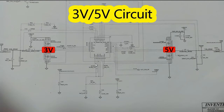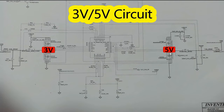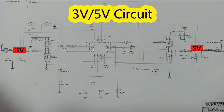In the circuit we have something very important called the controller. It controls the signals and the amount of voltage applied to each component, especially the MOSFETs. Its reference is TPE 51120 — this is the control IC. This IC controls two MOSFETs for the 3V/5V channel and also two MOSFETs for the 5V channel.